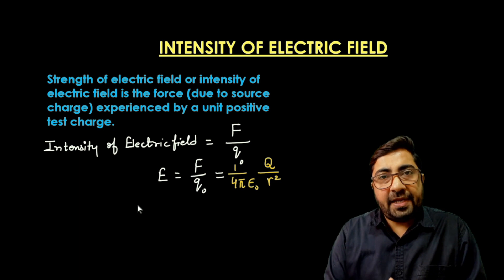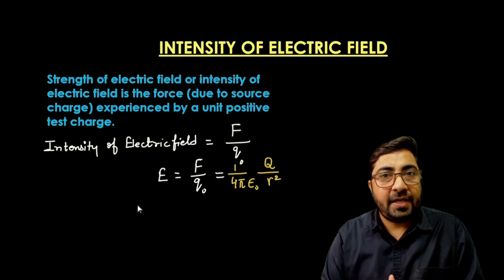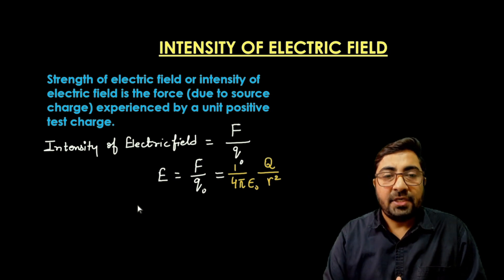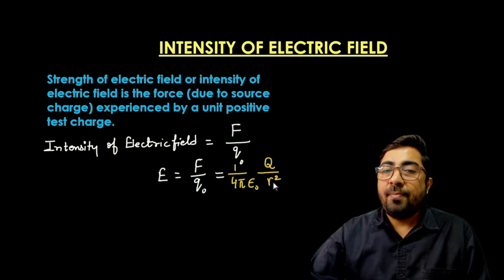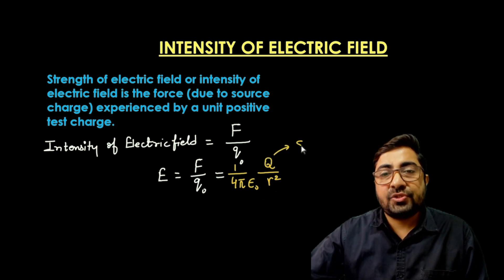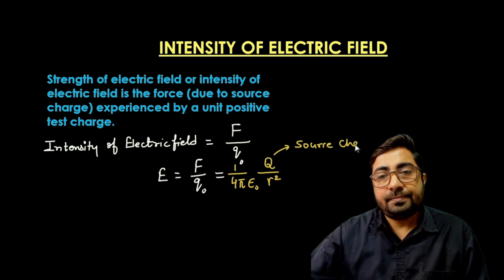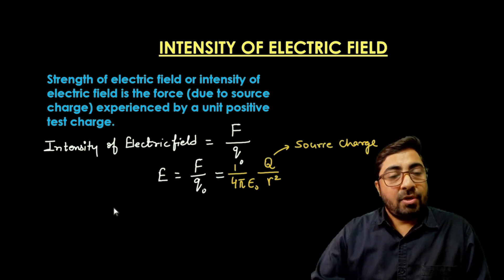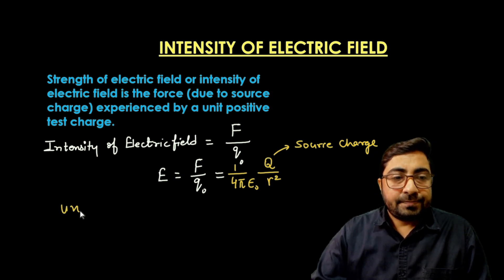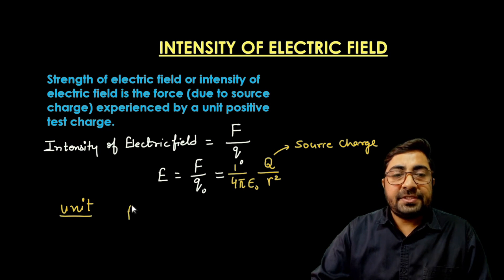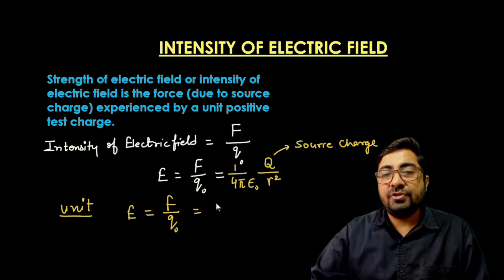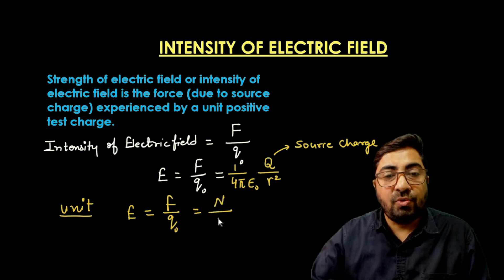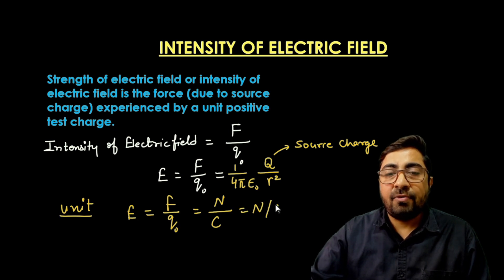The intensity of electric field — and hence simply the electric field — is the property of the source charge: E = (1/4πε₀)(Q/r²), where Q is the source charge and r is the distance. Its unit is newton per coulomb, or newton coulomb inverse.